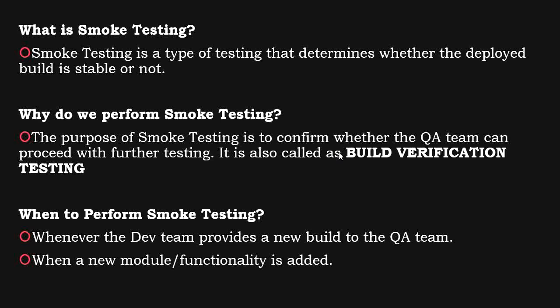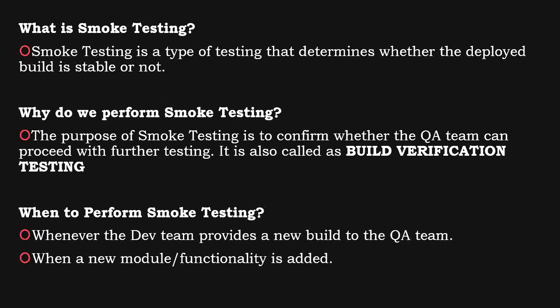Let me give you an example. You are working on an application which has features like login, transfers, and payment. Now a new feature is getting added — a transaction history module — which is the new build the dev team is going to give you. To make sure the new functionality is working fine, you will first check whether the transaction you made is getting recorded or not. This is the basic validation. If that passes, you can proceed with testing. That is when smoke testing is done.